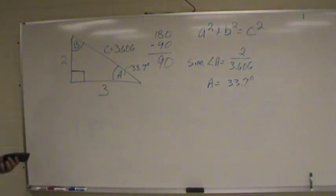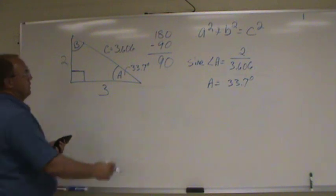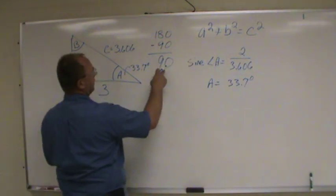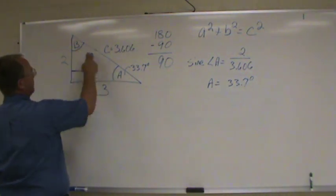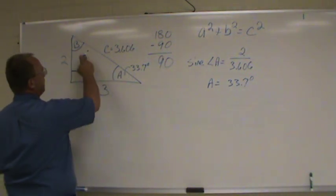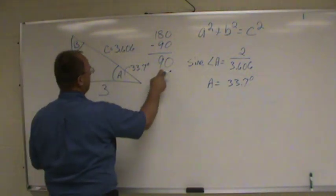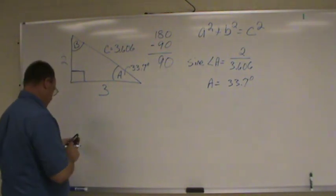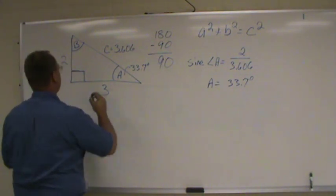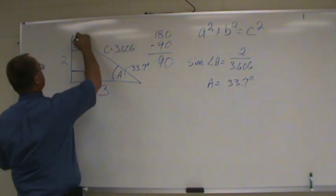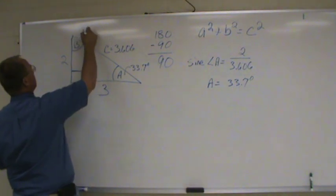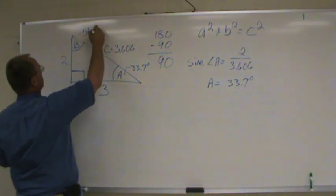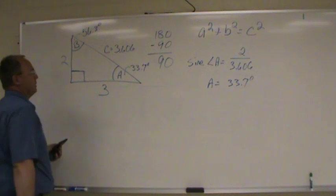Using the rule that these two angles have to equal 90 degrees, you can take 90 degrees minus 33.7 degrees and find that angle B equals 56.3 degrees.